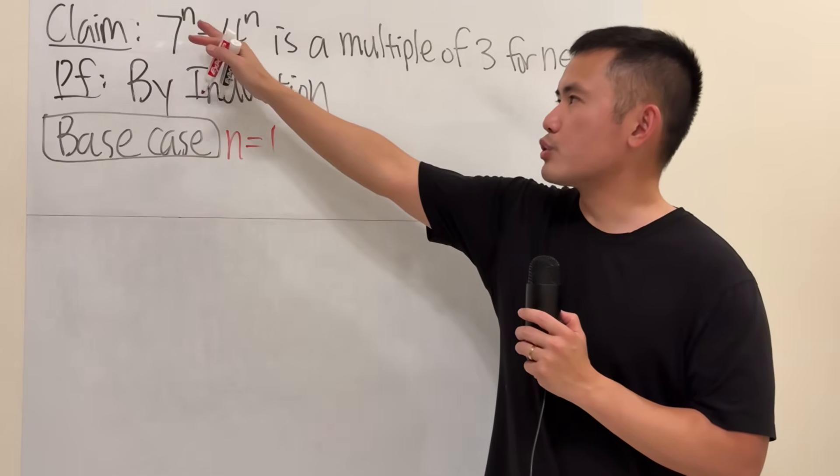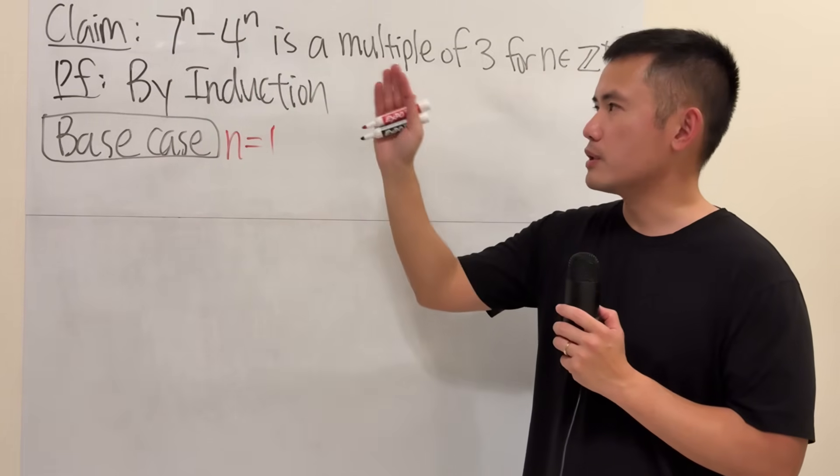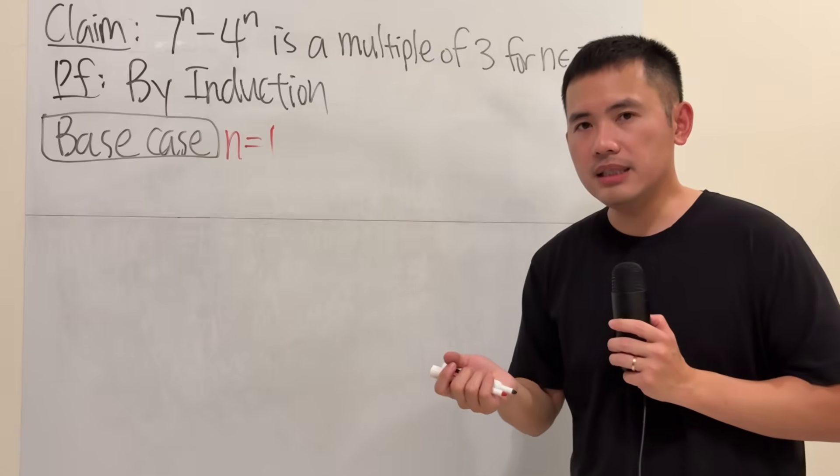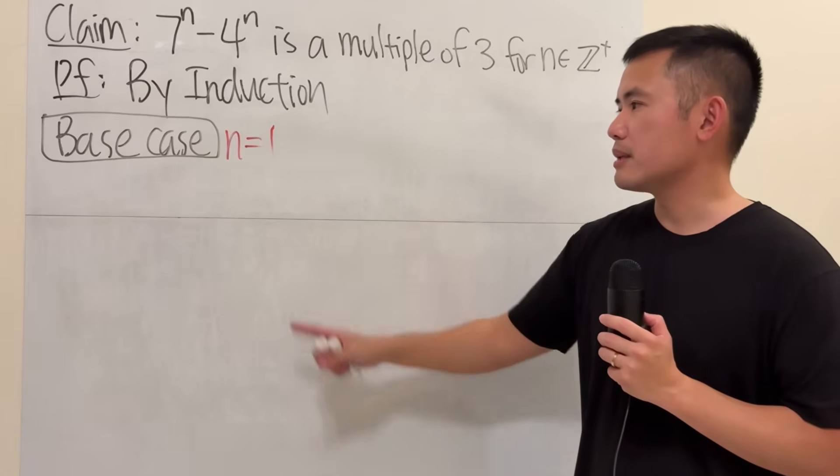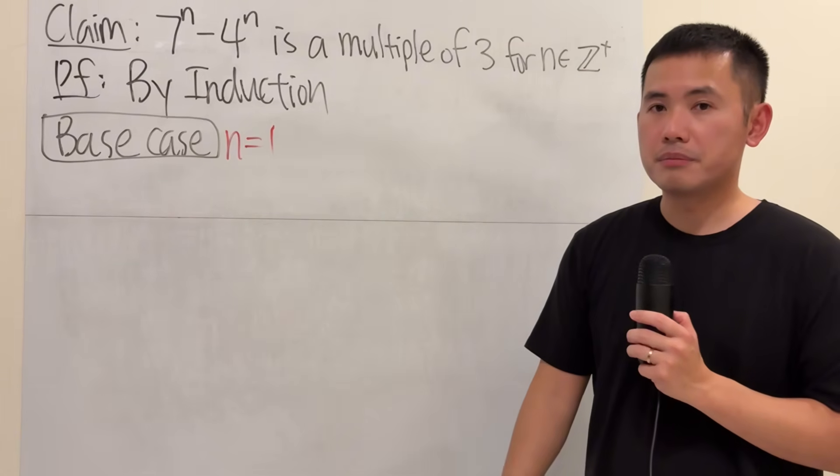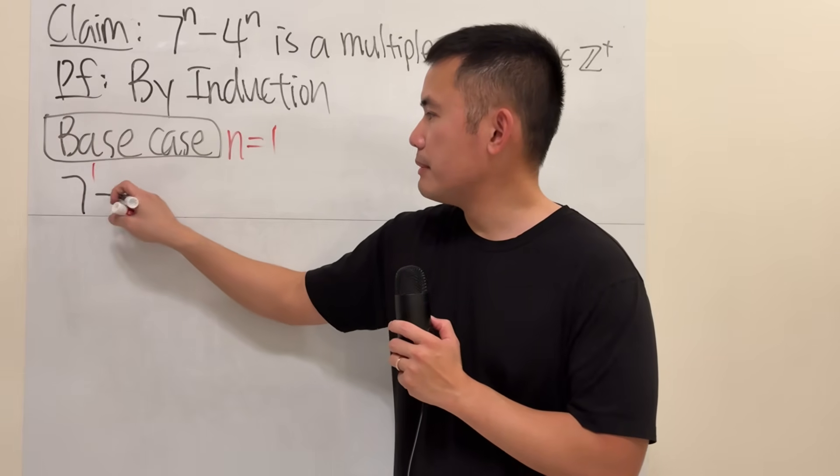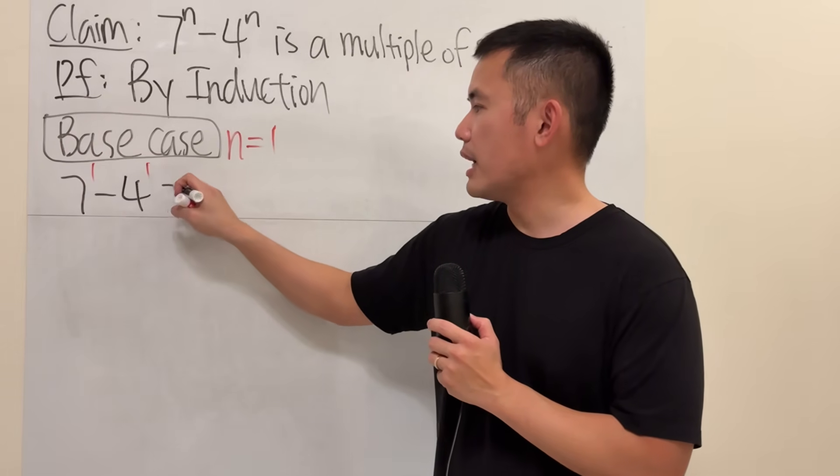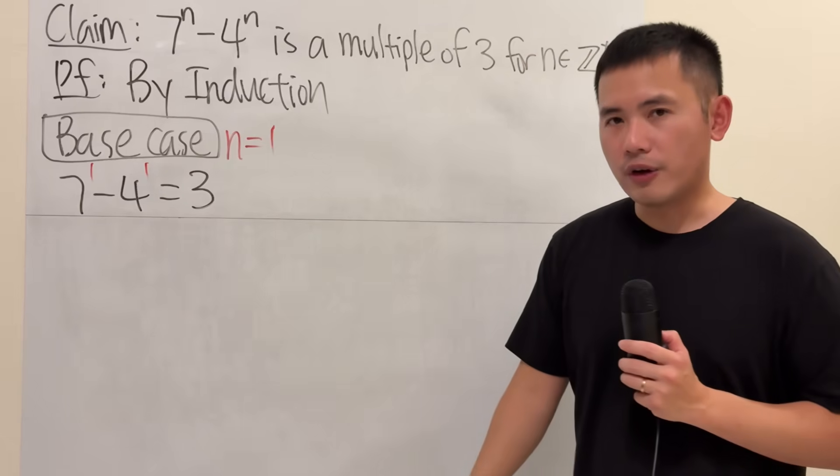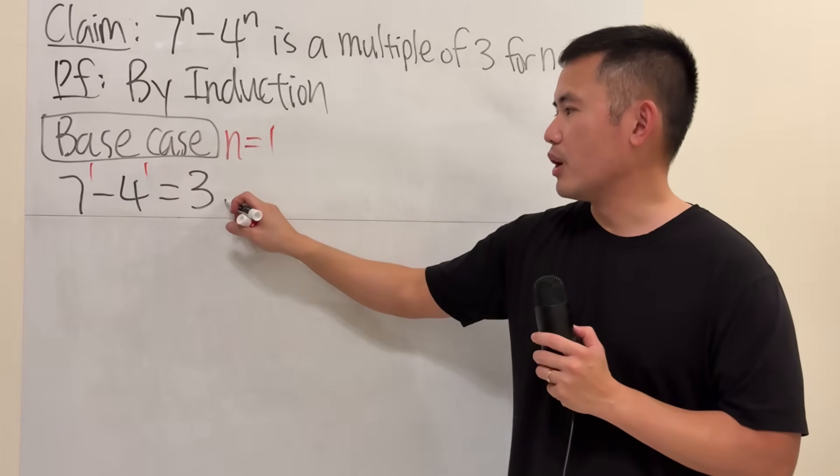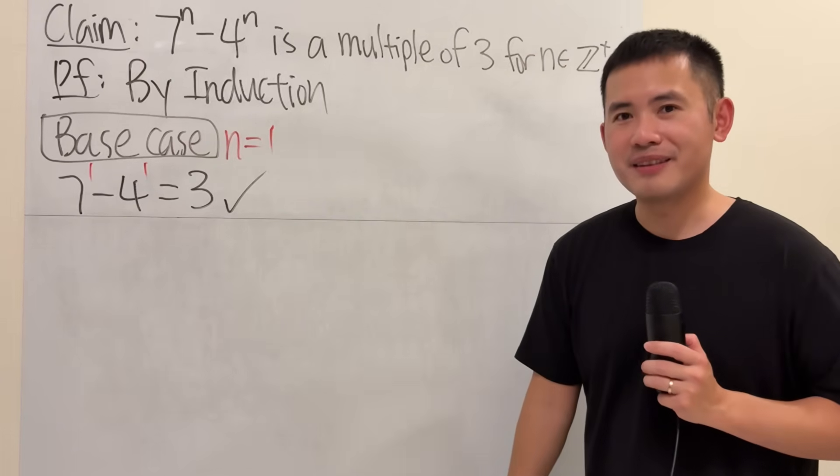Even though it's also true when n equals 0, because 1 minus 1 is 0, that's technically a multiple of 3, I'm just going to start with 1 right here. Plugging 1 into the nth, 7 to the 1st minus 4 to the 1st, work that out, is 3. 3 is, of course, a multiple of 3, so that checks. Done.